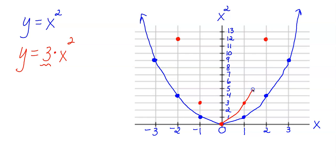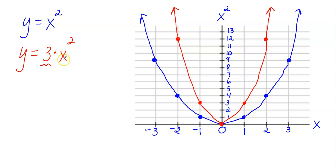Our new transform graph appears to be skinnier. That's how you vertically stretch a graph — you multiply the x squared value by some number greater than 1. To describe this transformation, you would say the parent function in blue was vertically stretched by a factor of 3, and it makes the graph appear to be skinnier.